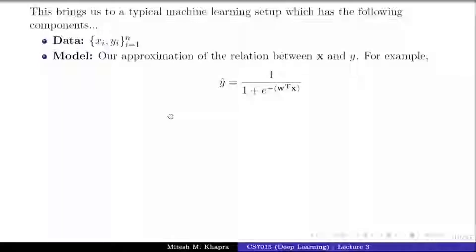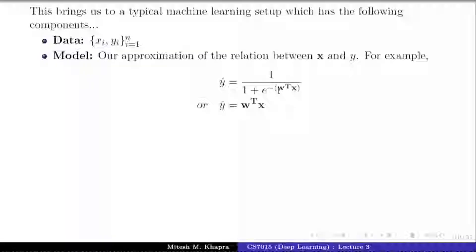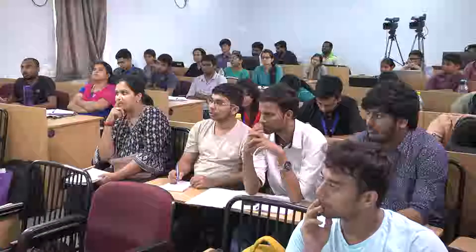So the models are approximations of the relation between x and y. For example, I can assume that x is related to y via the sigmoid function, and just as you had those mx plus c, I have introduced these parameters w here, and now my job is to learn these parameters w. Or I could have said that y is equal to w transpose x. What is this similar to? The equation of a plane.